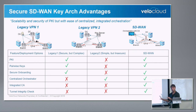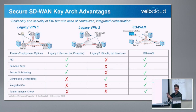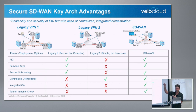We want to make sure this is done for both on-premise and for cloud — not only from a branch to hub, but even if traffic is going from the branch to IaaS apps, everything is PKI.